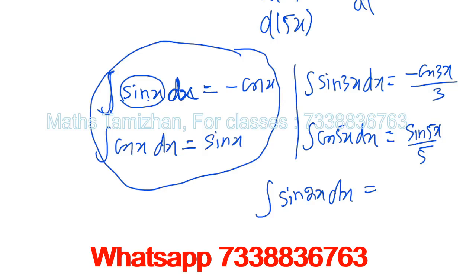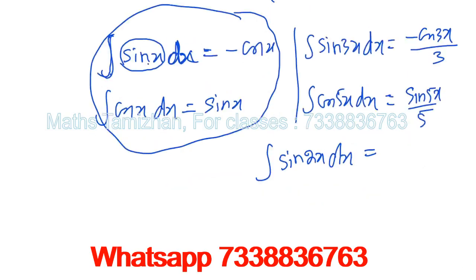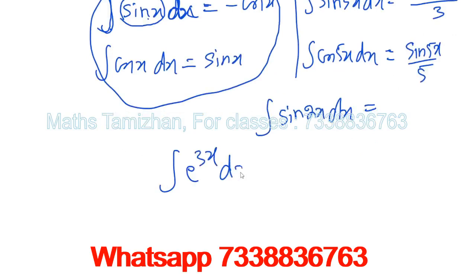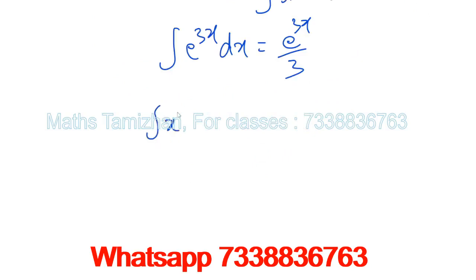Good. So integral of sin 2x is minus cos 2x over 2, and integral of sin 3x is minus cos 3x over 3. This also applies for the exponential case. You know the integration and differentiation rules: for x power n, differentiation brings the power to the front, and integration adds the power. Sin integrates to minus cos, cos integrates to sin, and exponential stays the same.